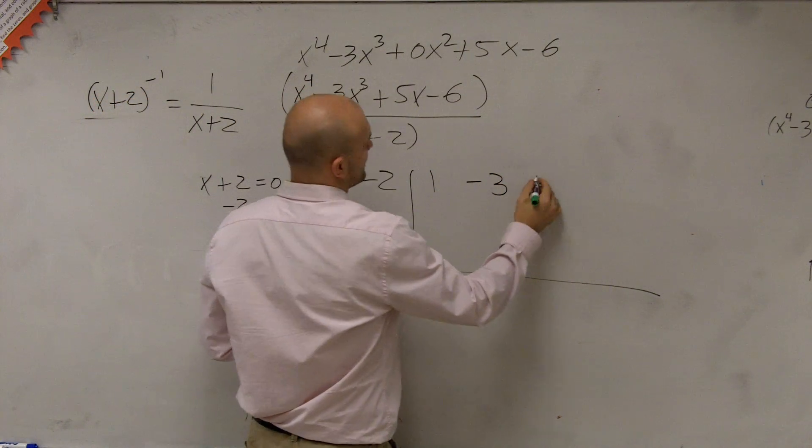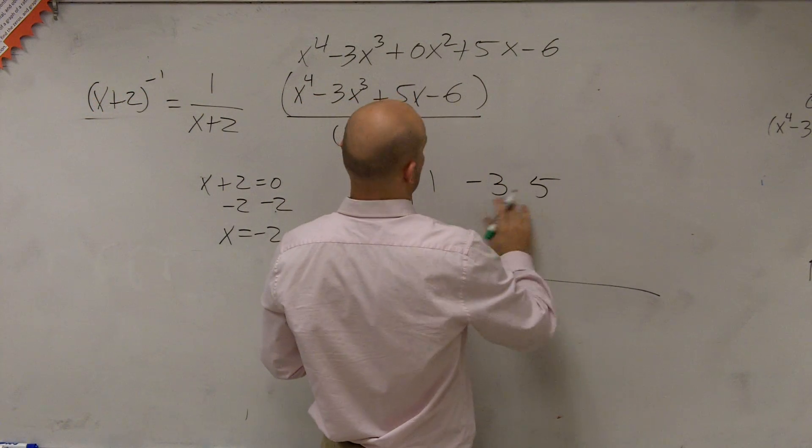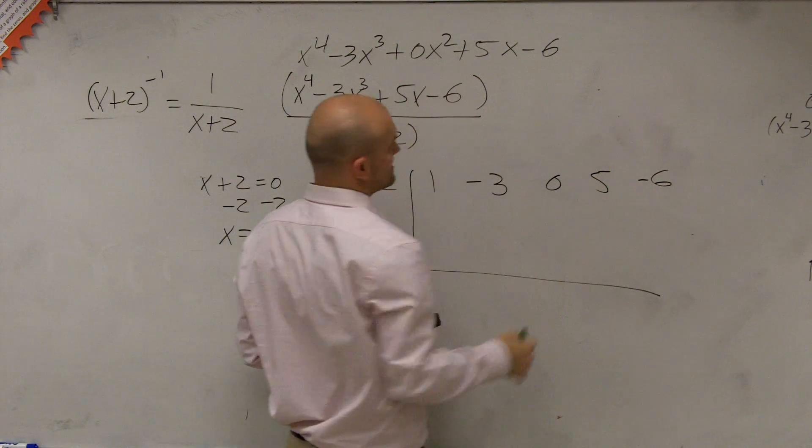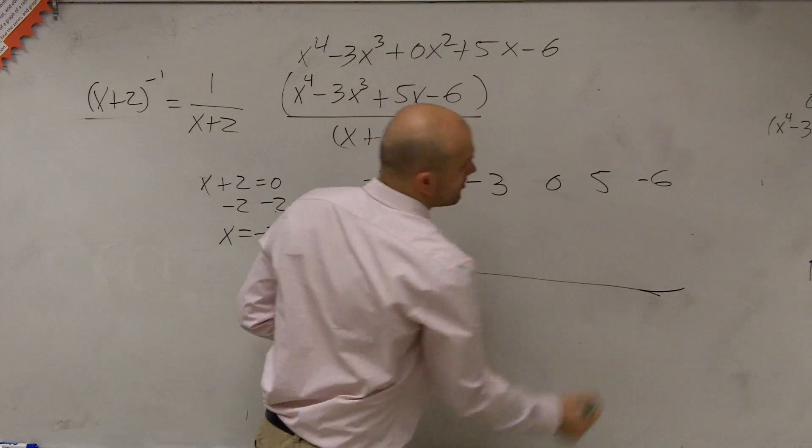So therefore we have 1, negative 3, 5. No, sorry. 1, negative 3, 0, 5, negative 6. Anybody follow?